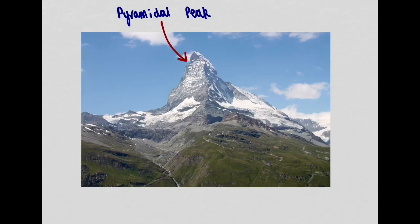Now in order to get a pyramidal peak we essentially just need three coris. We need one cori here, a second cori here to form your arete running up here, and then we need a third cori forming on the back of this mountainside to enable that pyramid shape to form.